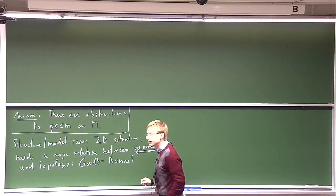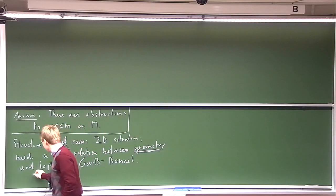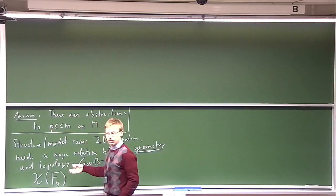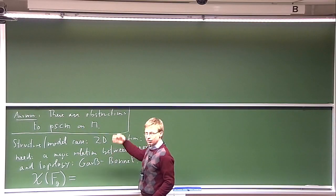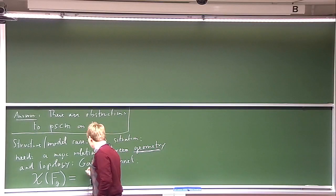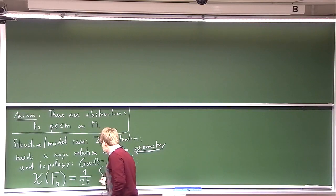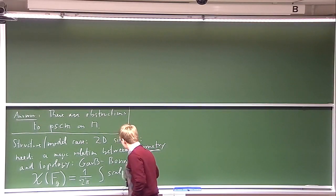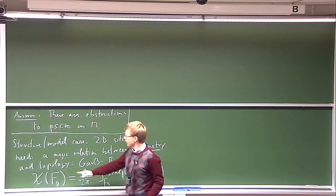The Gauss-Bonnet theorem gives exactly the connection between geometry and topology. It tells us that the Euler characteristic of the surface — the only topological invariant we need to care about — can be computed purely geometrically for any smooth closed surface. Specifically, it equals (up to some constant, roughly 2π) the integral of the scalar curvature using the volume form over the surface.